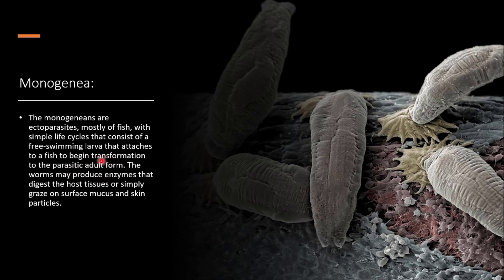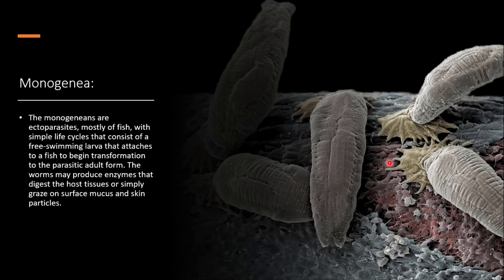Once in parasitic adult form, the worms produce enzymes that damage and digest the host tissues, or they graze on surface mucus and skin particles. As you can see in the picture, these monogenean parasites are found on the fish's skin, damaging and digesting it.